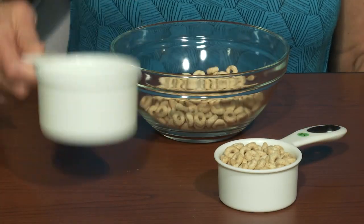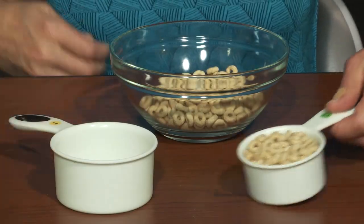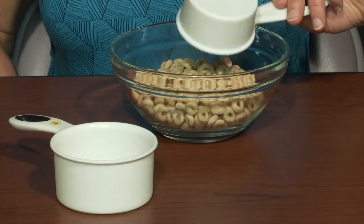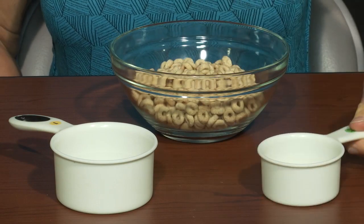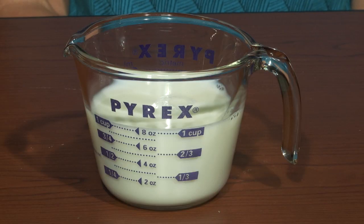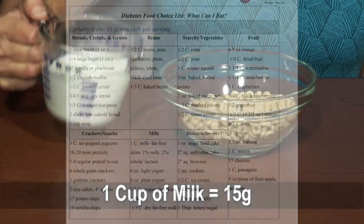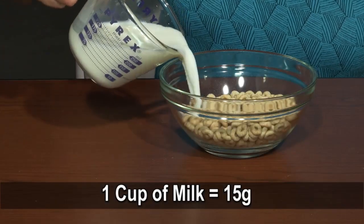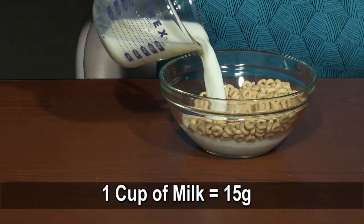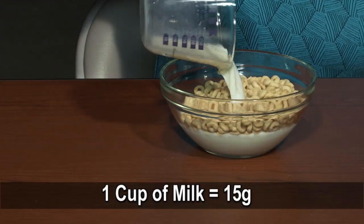It is important to measure your food for accuracy. You will be having your Cheerios with one cup of milk. Let's use the Jocelyn Food Choice List to check the carbohydrate count in one cup of milk. We see that one cup of milk equals 15 grams of carbohydrates.